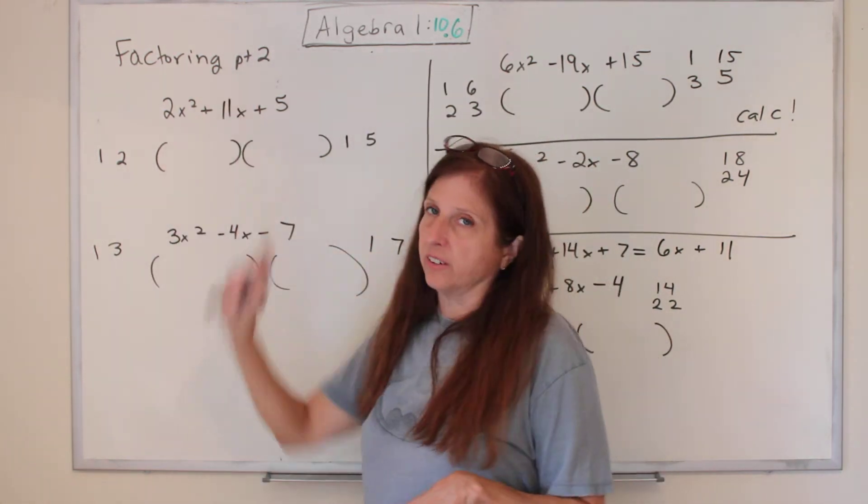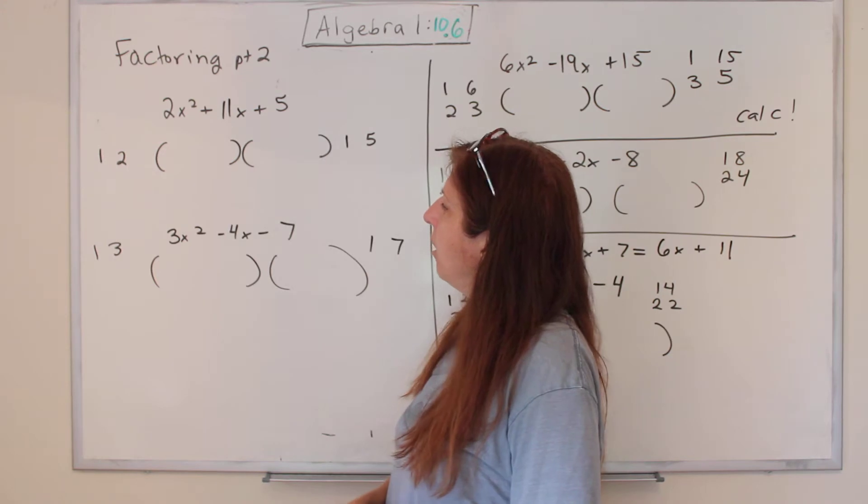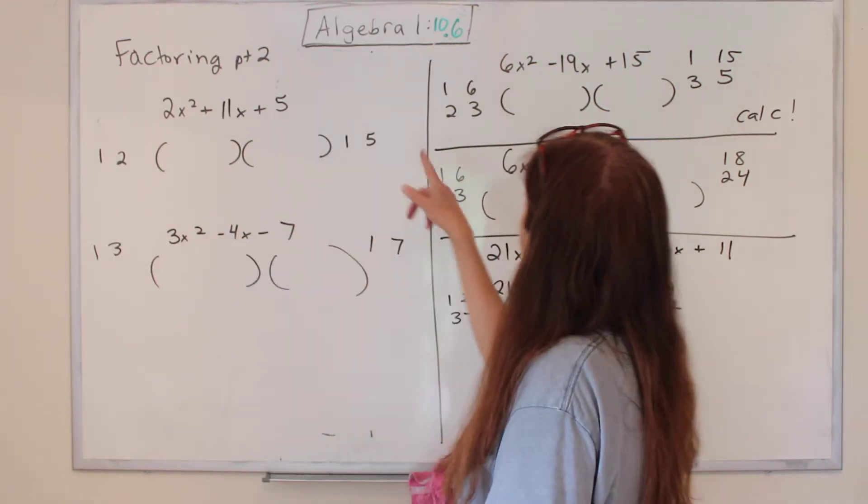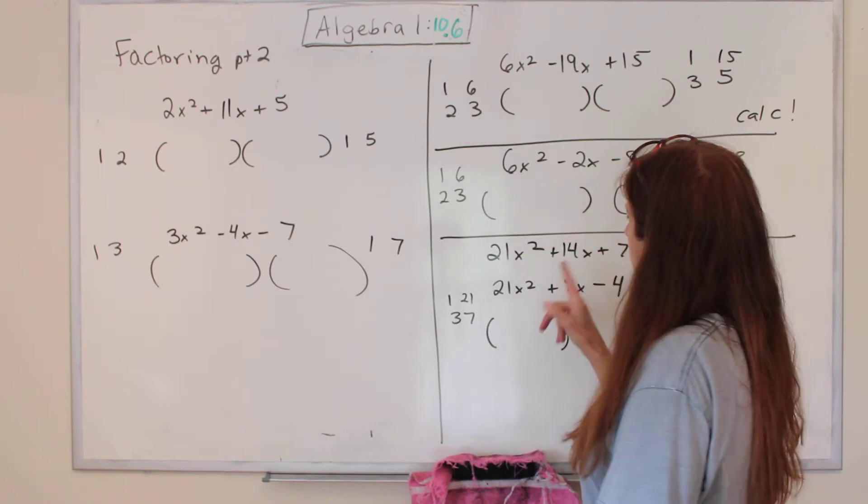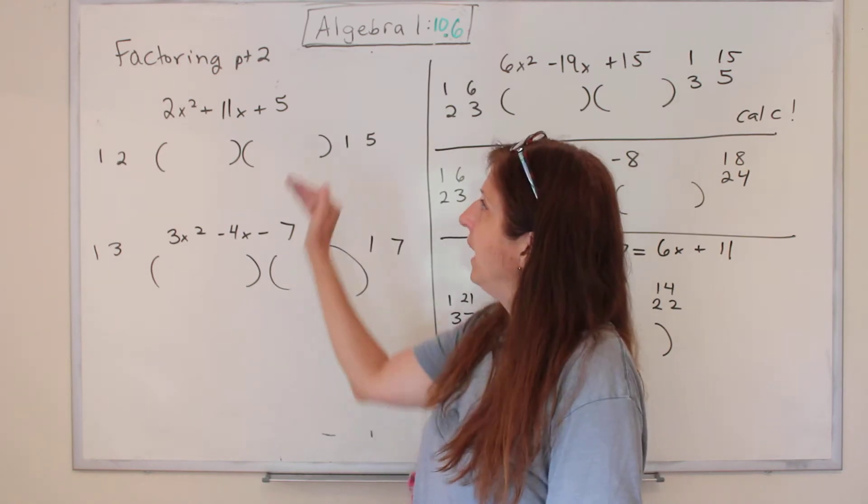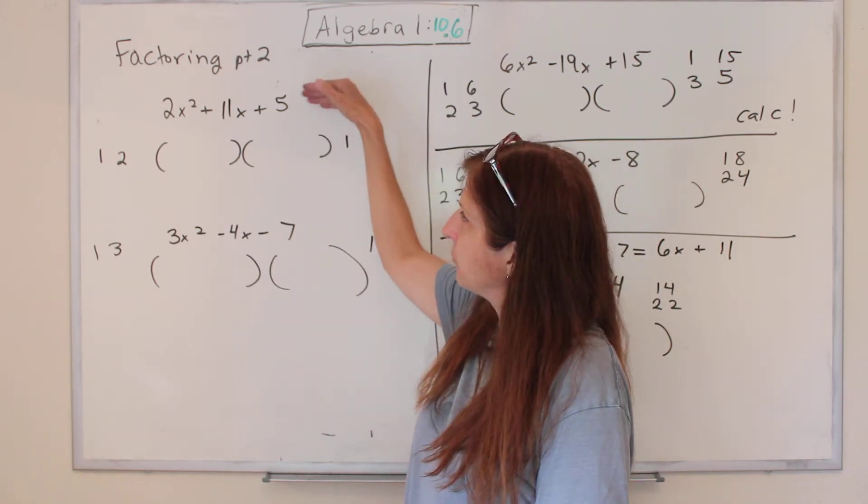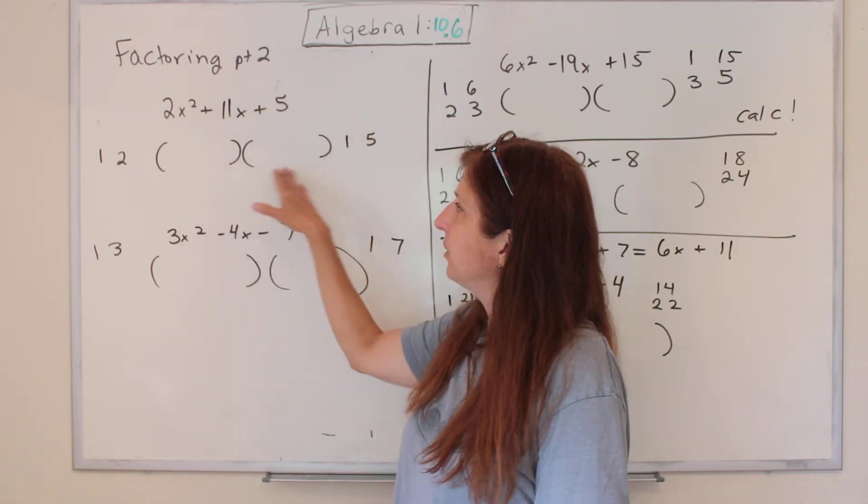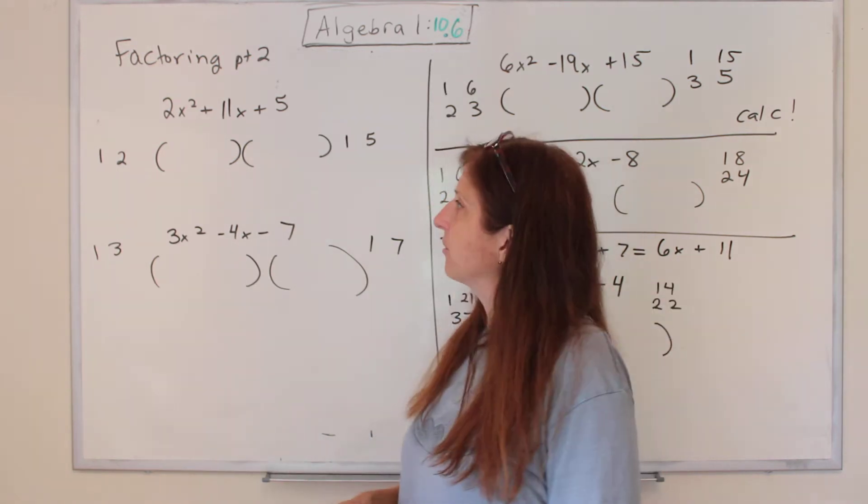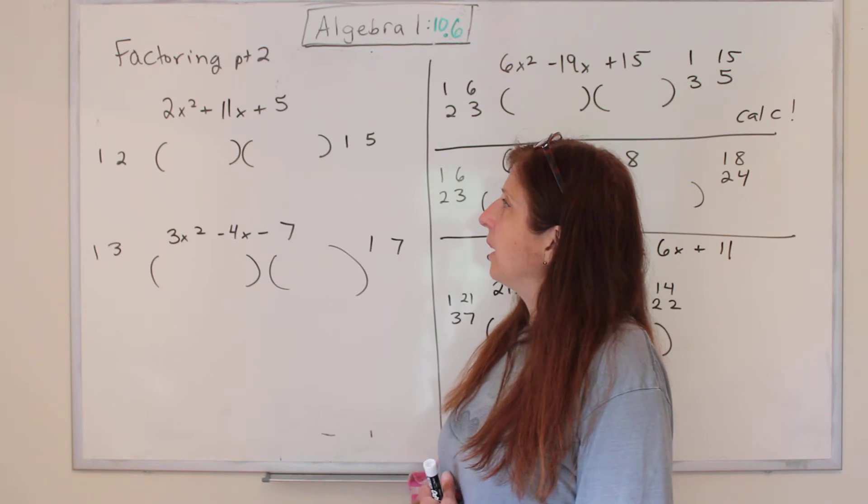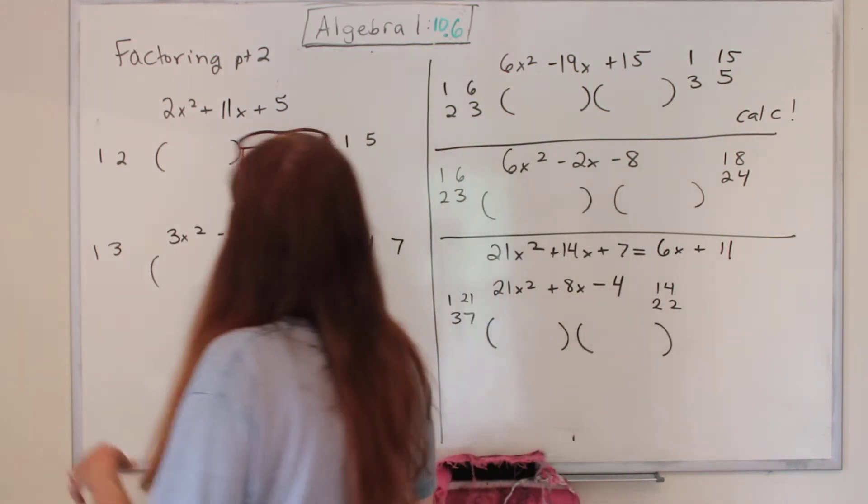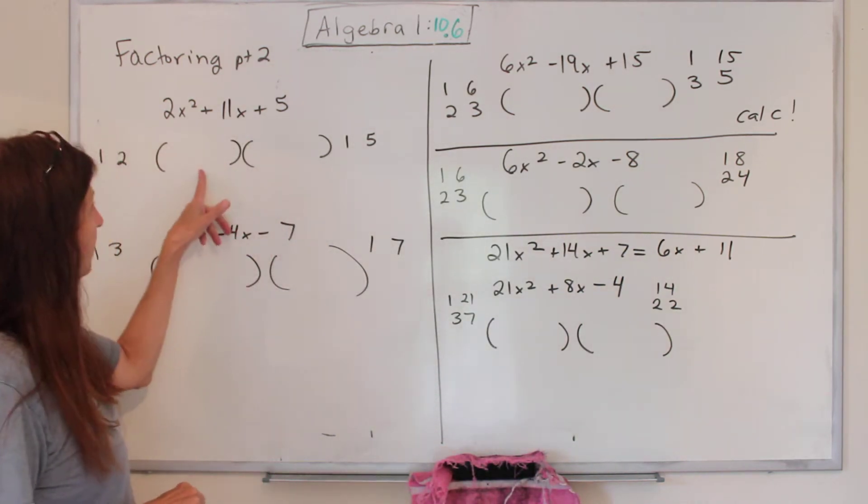We've been talking about factoring. Last time, all of the ones we did had an understood 1 to go with the x squared. But you can see, today they don't. Remember what this is - it's going backwards from a polynomial to the things that you can multiply to get it, called factors. First I'm going to show you how to do it in 1987, and then we'll talk about 2020.